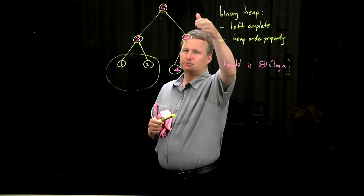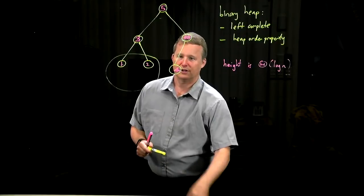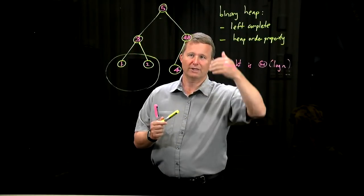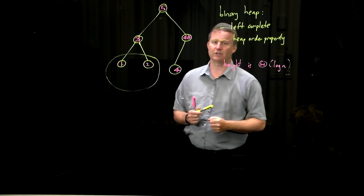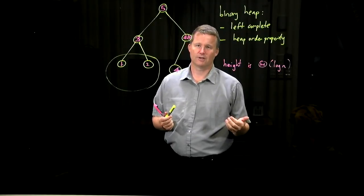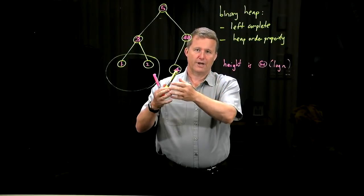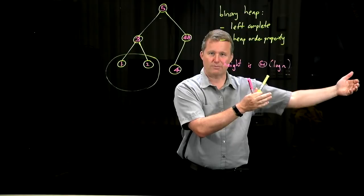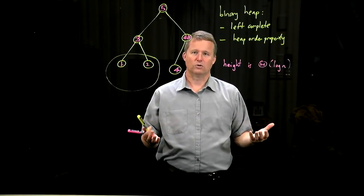So this bubbling up is a process that could only go as far as the root in the worst case. Again, the height is log n, so it can only take order log n time. So both insertion and deletion can be done in order log n time. Putting that together, building a heap by n insertions and then deleting n times will give us an order n log n sorting algorithm, which we can call heap sort.